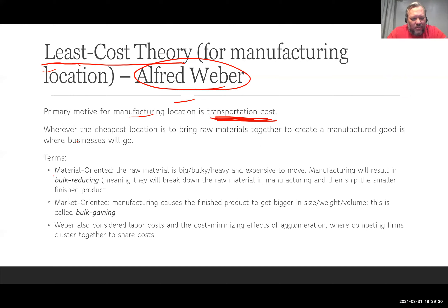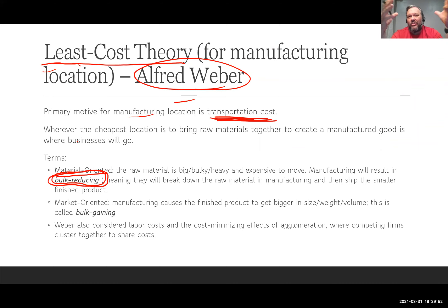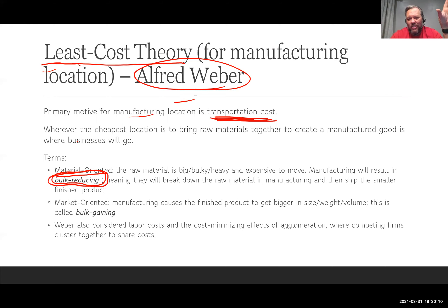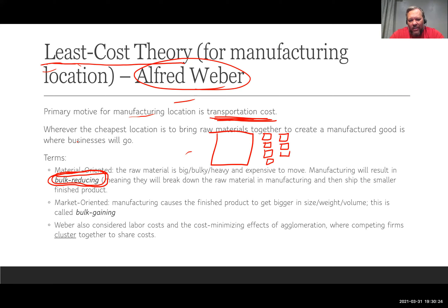Two key AP terms related to this: material-oriented industry and bulk-reducing. Bulk-reducing means the raw material — like iron ore — is extremely costly to transport long distances, so you locate manufacturing close to where it's extracted. As you process it, the product becomes smaller and cheaper to ship onward to the market. You start with a large raw material and reduce it into smaller, finished products.